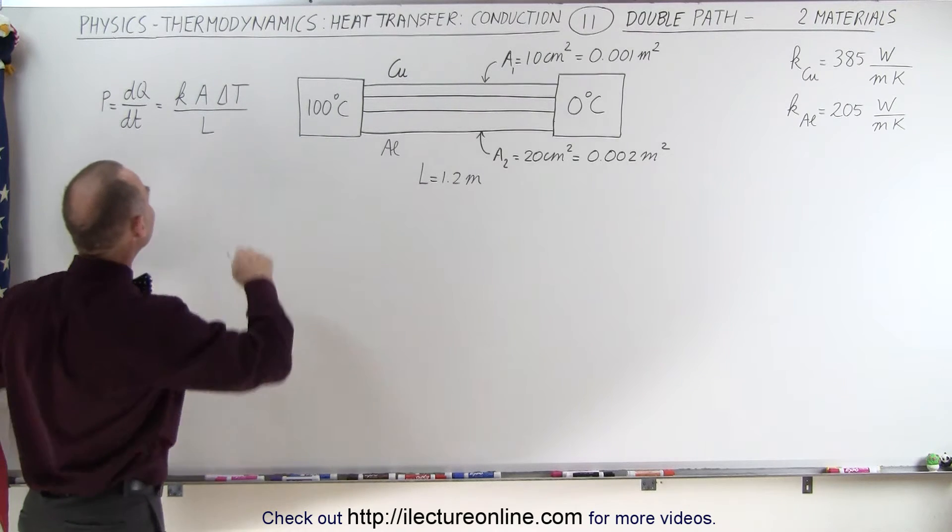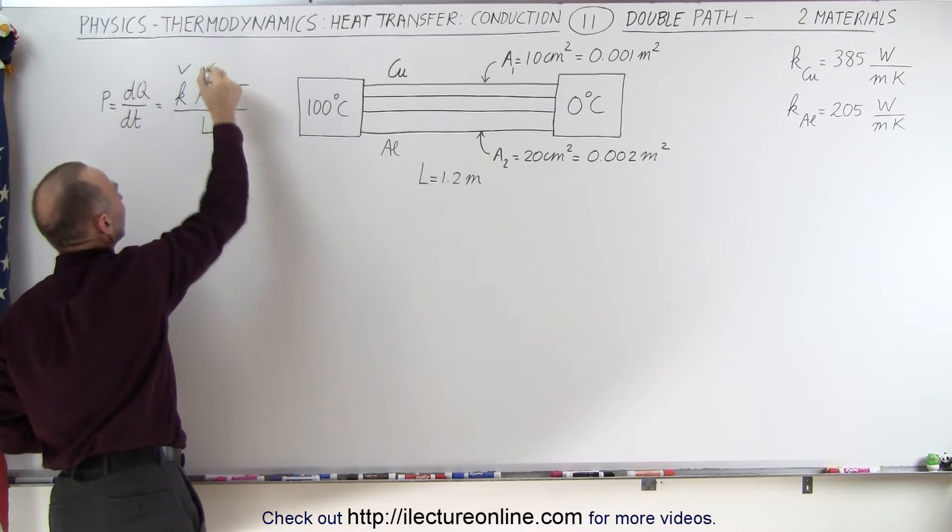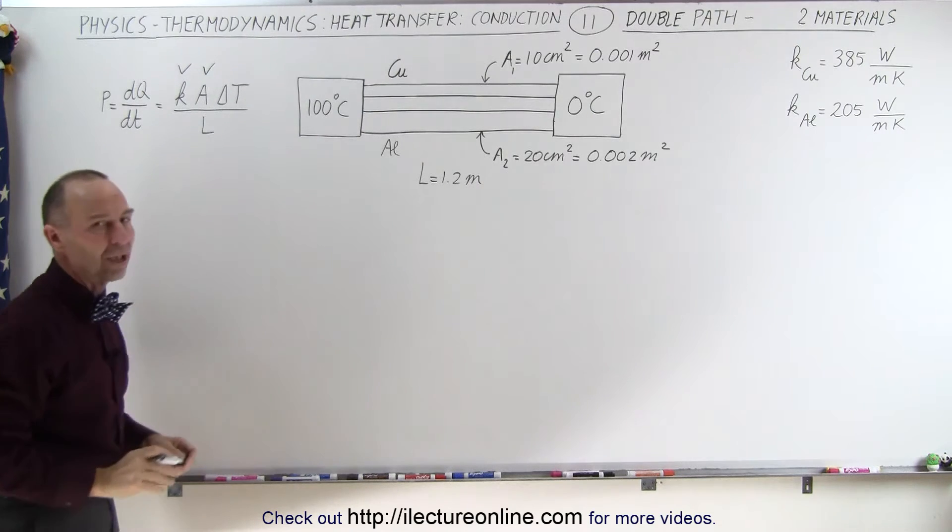Now, in this case, notice that the k's are different. They're two different materials, and the cross-sectional areas are different. But the delta T, the difference in temperature is the same, and the length is the same.